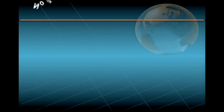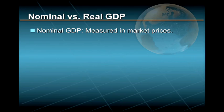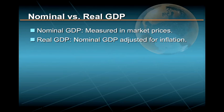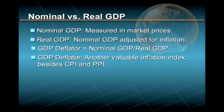It is also useful to distinguish between nominal GDP and real GDP. Nominal GDP is measured in actual market prices. However, since prices change over time, using nominal GDP to measure economic growth would be like using a rubber yardstick — one that stretches in your hands from day to day. To address this problem, macroeconomists use real GDP, which is nominal GDP adjusted for inflation, calculated in constant prices for a particular base year such as 1992. Dividing nominal GDP by real GDP gives the GDP deflator, another valuable inflation index.